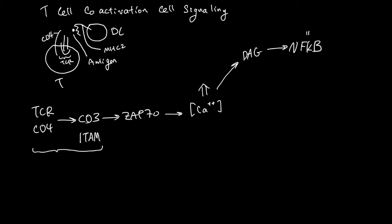NF kappa B is a transcription factor, so it goes to the nucleus and changes the gene expression of this T-cell. Also, the increased calcium concentration leads to binding of calcineurin, and calcineurin activates NFAT, which stands for nuclear factor of activated T-cell.